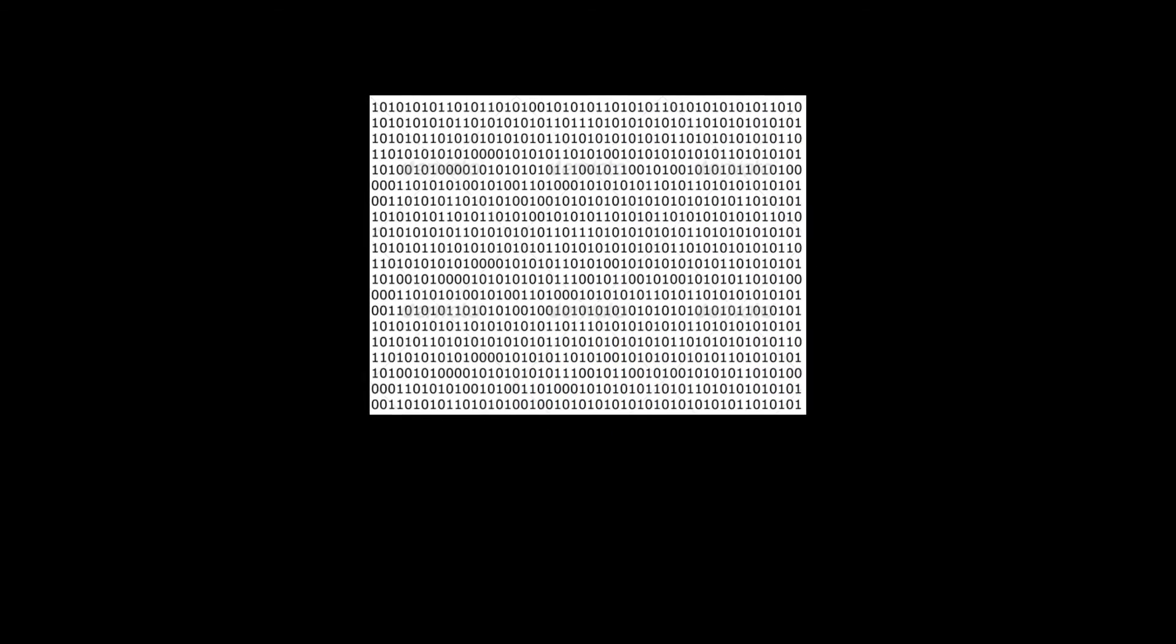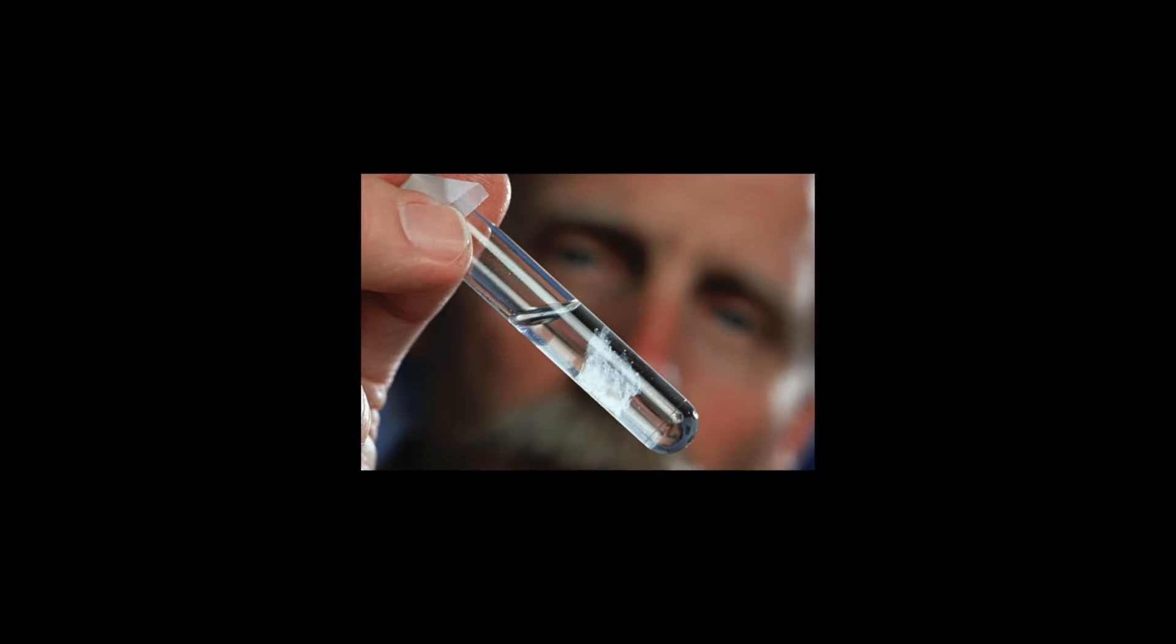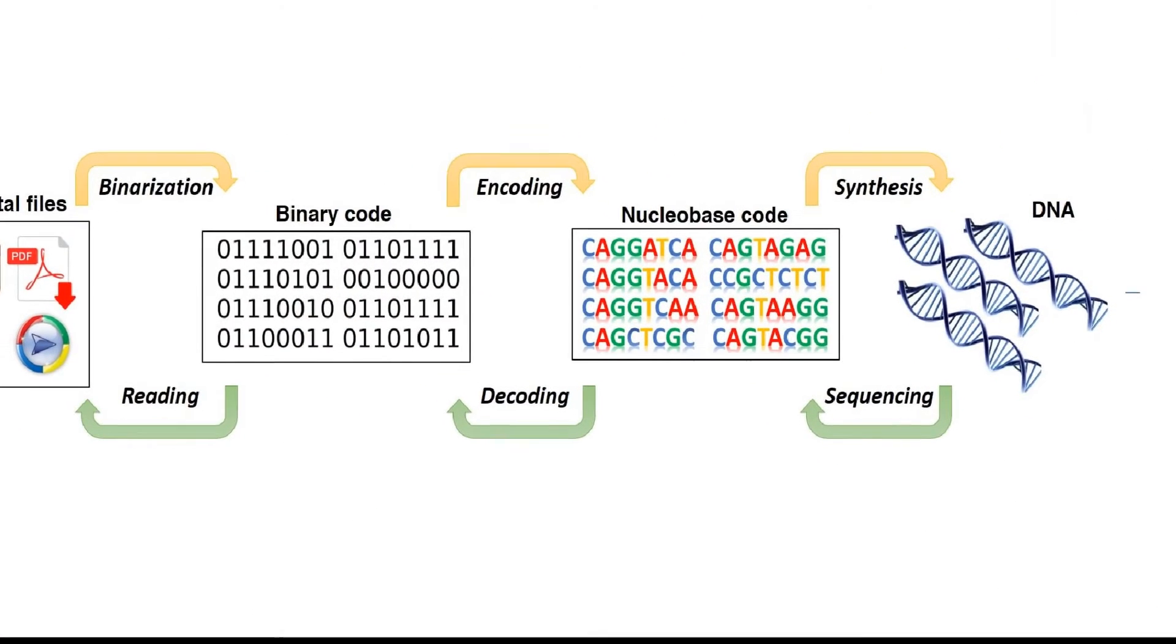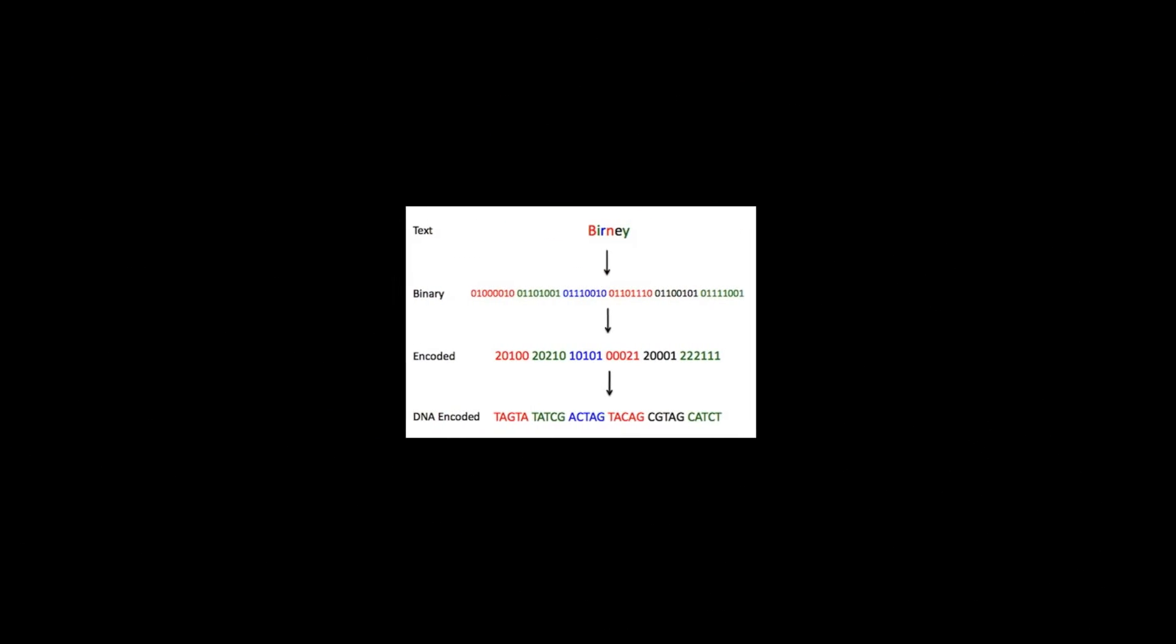using an erasure-correcting algorithm called Fountain Codes. They randomly packaged the strings into so-called droplets and mapped the ones and zeros in each droplet to the four nucleotide bases in DNA: A, G, C, and T. The algorithm deleted letter combinations known to create errors and added a barcode to each droplet to help reassemble the files later.